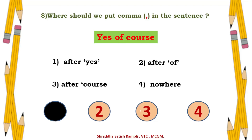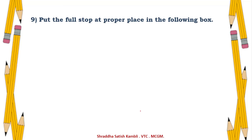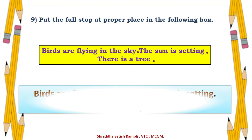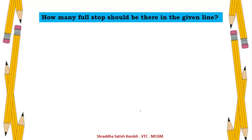Eighth example: where should we put a comma in the sentence 'Yes of course'? The comma should go after 'Yes' — making it 'Yes, of course.' That is where the comma appears in the sentence.